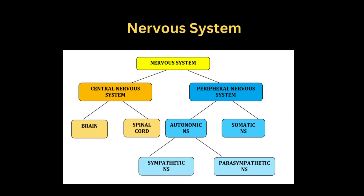Hi, hello, welcome back. So today we will be seeing about anatomy of nervous system. When we go for an interview, they will be asking you to say about any one system, and you have to talk about that system for nearly two minutes so that you will have a proper explanation regarding that system. Whenever you are beginning with a system, you have to talk about the functions first.